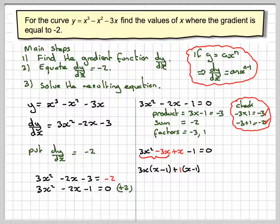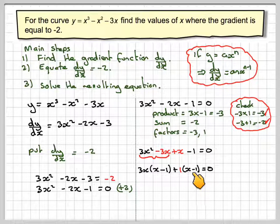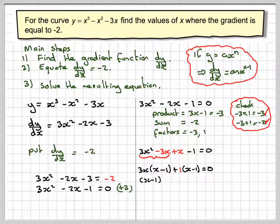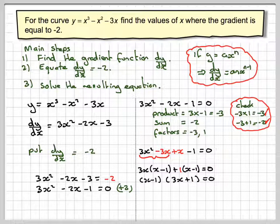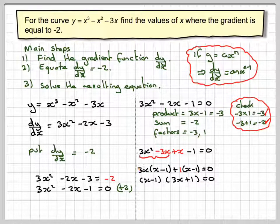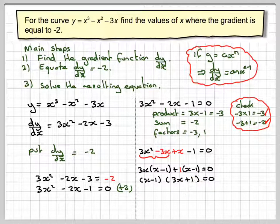The 1 doesn't change the meaning. It's still equal to 0. Now we have a common factor of x minus 1. So we have x minus 1 times 3x plus 1 is equal to 0. So the x minus 1 has come out, and it leaves a 3x plus 1.